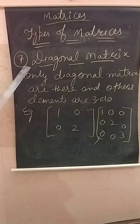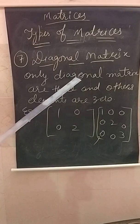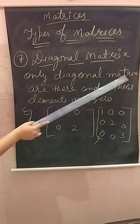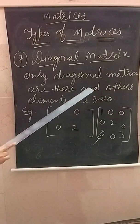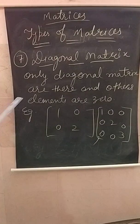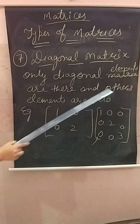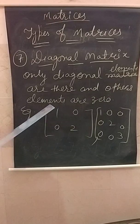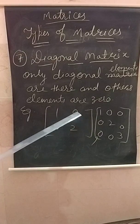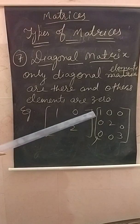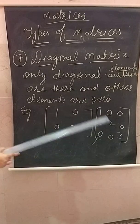Next is the diagonal matrix. In this matrix, only the diagonal elements are present and all other elements are zero. In a two by two matrix, the two diagonal elements are non-zero and the other two elements are zero. In a three by three matrix, the three diagonal elements are non-zero and the other six elements are zero. This is called the diagonal matrix.